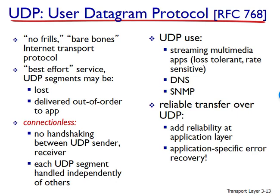Both UDP and TCP are used today for multimedia applications such as internet phone, real-time video conferencing, and streaming of stored audio and video. All of these applications can tolerate a small amount of packet loss, so reliable data transfer is not absolutely critical. Furthermore, real-time applications like internet phone and video conferencing react very poorly to TCP's congestion control. For these reasons, developers of multimedia applications may choose to run their applications over UDP instead of TCP.